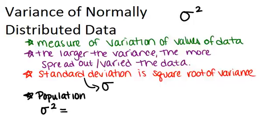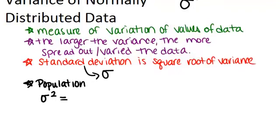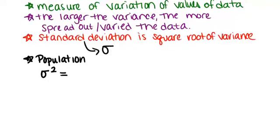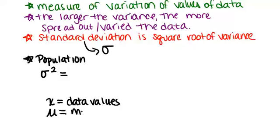So to find the variance, what you need to know is three different things. You need to know x, which is really all of the different values of data. So there are multiple values for x. So if there are a hundred different things in your population, you have a hundred different values for x. You also need to figure out mu, which is the mean of your data.